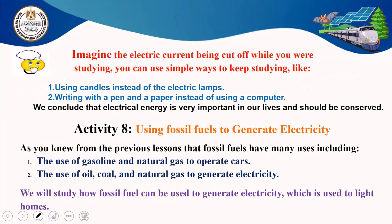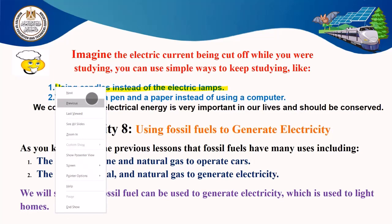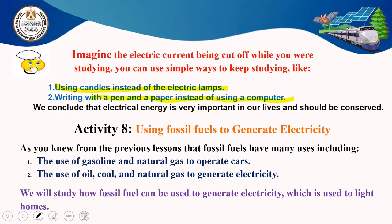Imagine the electric current being cut off while you were studying. You can use simple ways to keep studying. In the past, when I was a child, the electricity would cut many times. We used to use candles instead of electric lamps. We used to write with pen and paper instead of using a computer, mobile, or laptop. So you must use candles instead of electric lamps, and write with a pen and paper instead of using a computer.